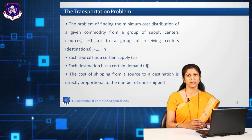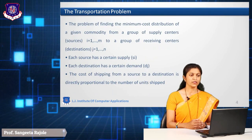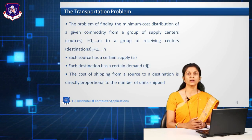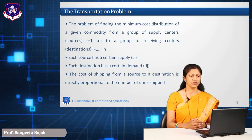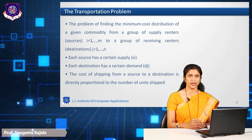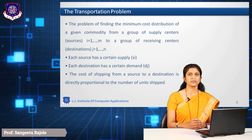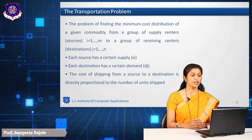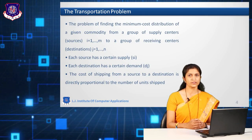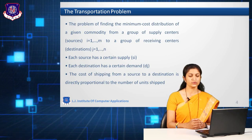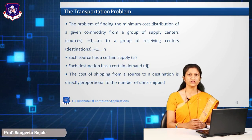The problem involves finding a minimum cost distribution of a given commodity from a group of supply centers, i from 1 to m, to a group of receiving centers, i.e., destinations j from 1 to n. Each source has a certain supply represented by s_i. Each destination has a certain demand represented by d_j. The cost of shipping from source to destination is directly proportional to the number of units shipped.